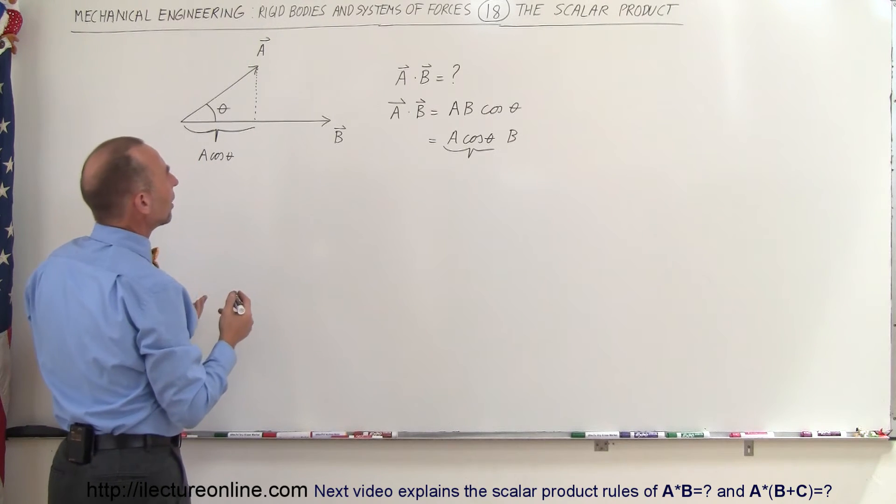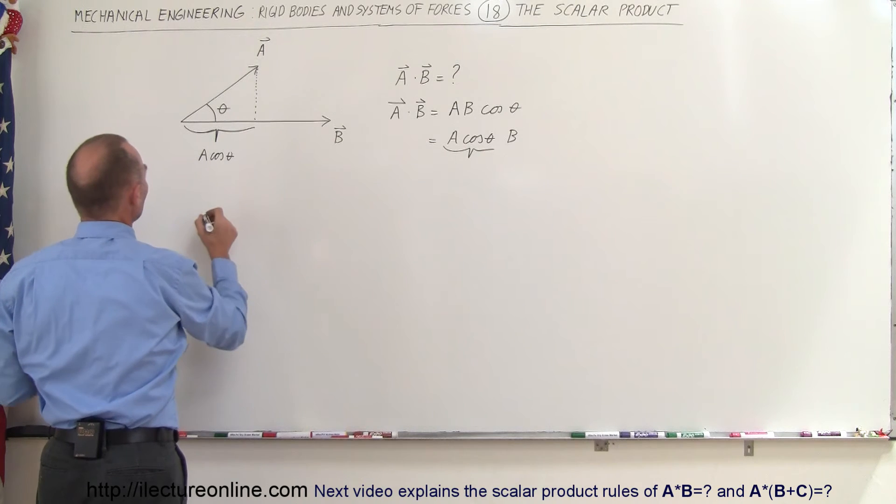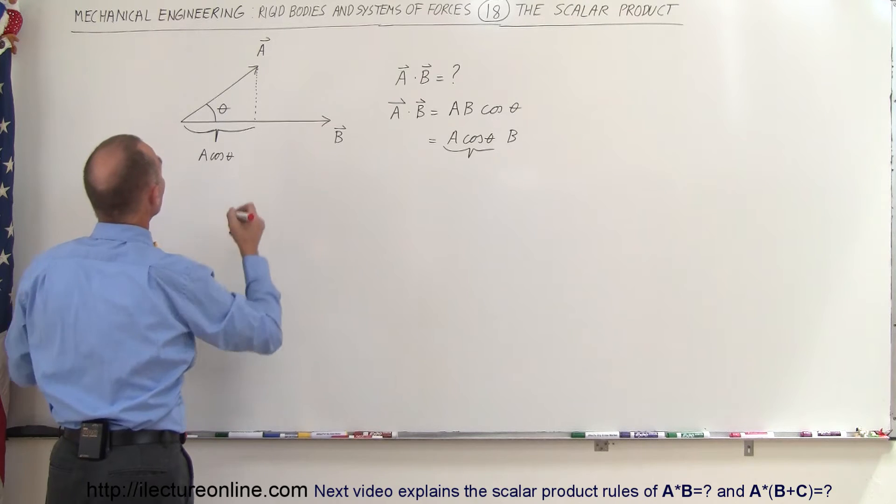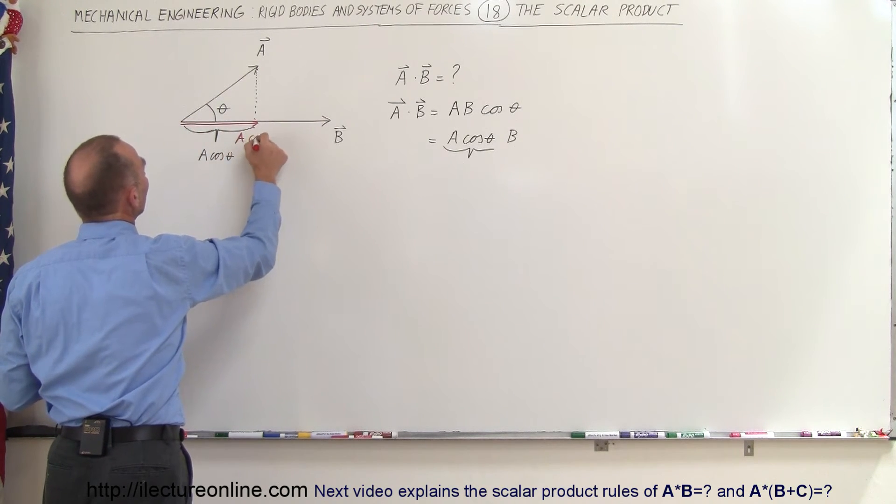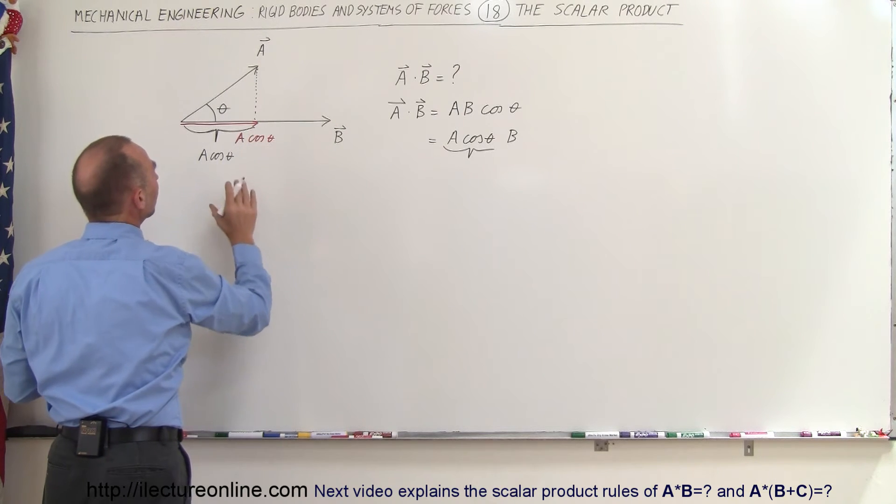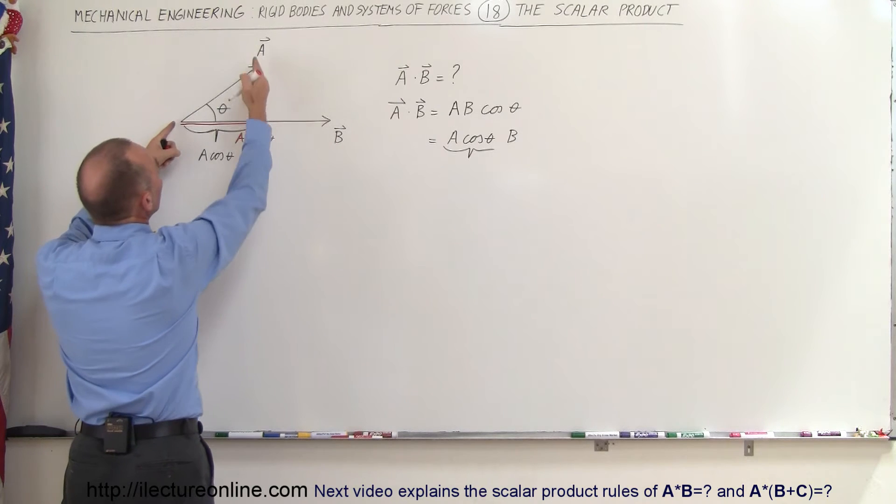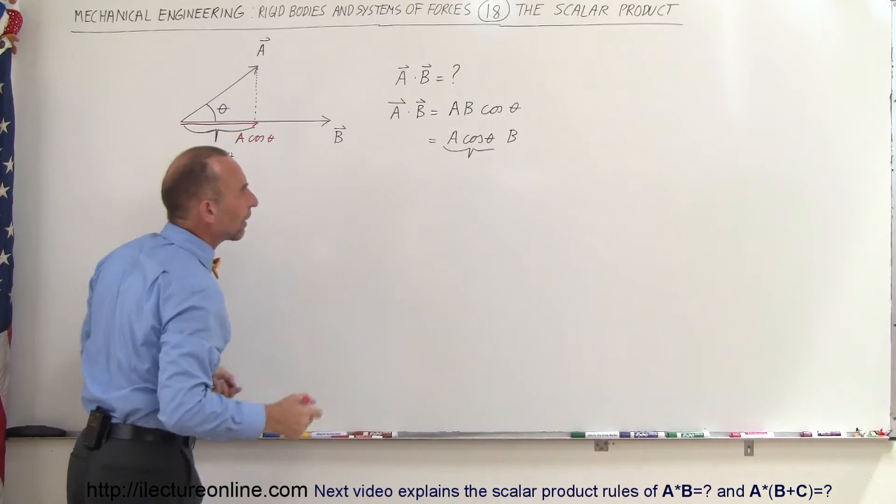So, another way of looking at it would be the following. This can then be written as, let me use some color here. So, let's take this quantity right here. This will then be A times the cosine of theta. And so, the scalar product between any two vectors is simply the magnitude of the projection of the one vector times the magnitude of the other vector.